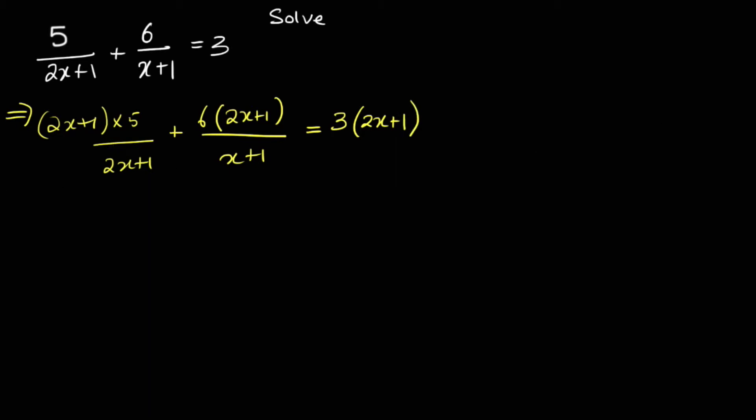Now what's the next step? We start canceling the stuff out and timing in it. 2x plus 1 under 2x plus 1, that cancels out. So it's just like 5 plus 12x. You're expanding the bracket now. Expand. Keyword: expand the bracket. You got 12x plus 6 over x plus 1. Equals to 6x plus 3. Expand again.